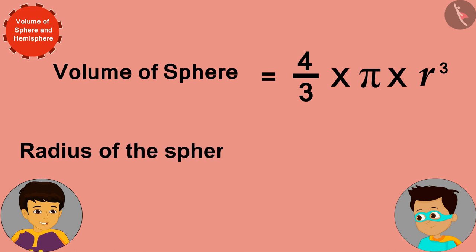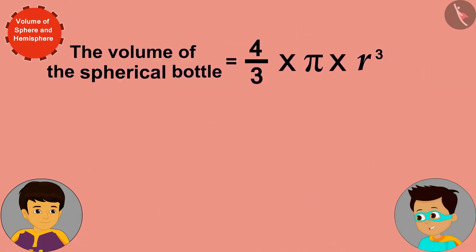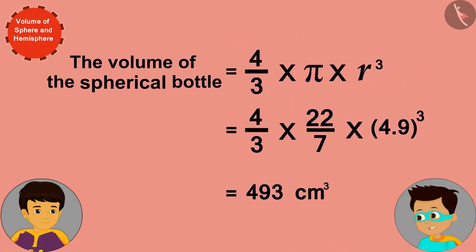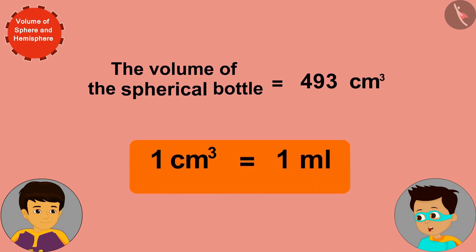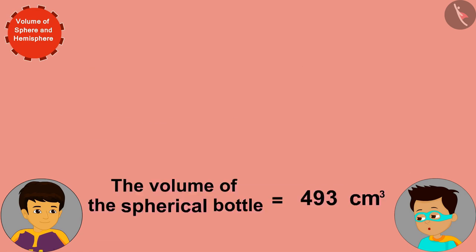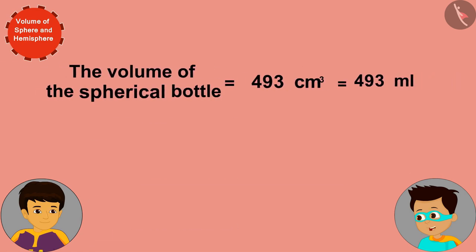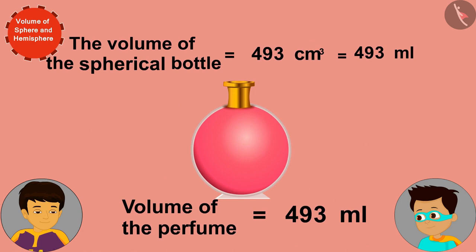The radius of the spherical bottle is 4.9 centimeters. The volume of the spherical bottle is 493 cubic centimeters. And because one cubic centimeter is equal to one milliliter, we can say that 493 milliliters of perfume is filled in the spherical bottle.